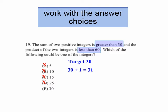But if we look at 30, 30 plus 1 would be greater than 30. It would be 31. And 30 times 1 is 30, which is less than 60. So see, working off the answer choices helps out.